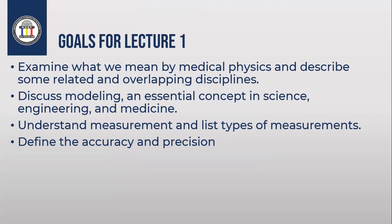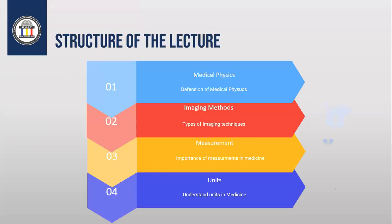The goal of this lecture will be to examine what we mean by medical physics and describe some related and overlapping disciplines. The second part will explain modeling and the concept of science, engineering, and medicine. Then we will understand measurements, the types of measurements we have, and how measurements affect doctor decisions. We will also define accuracy and precision.